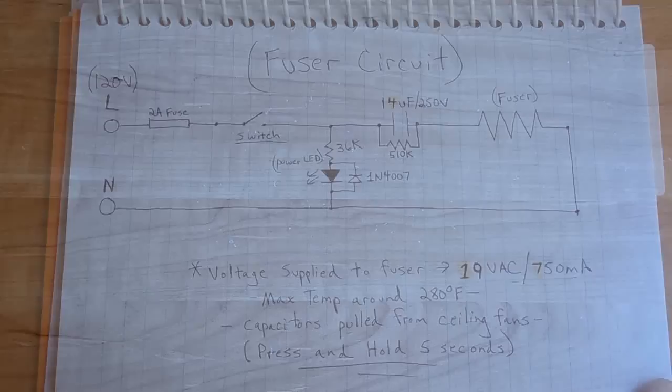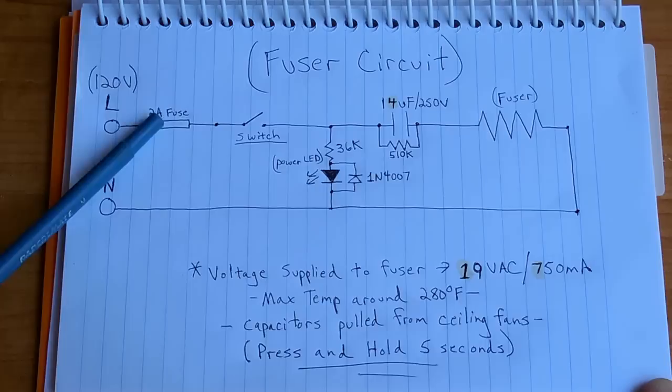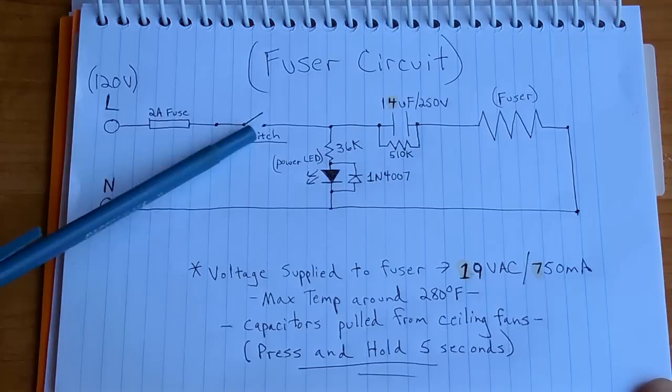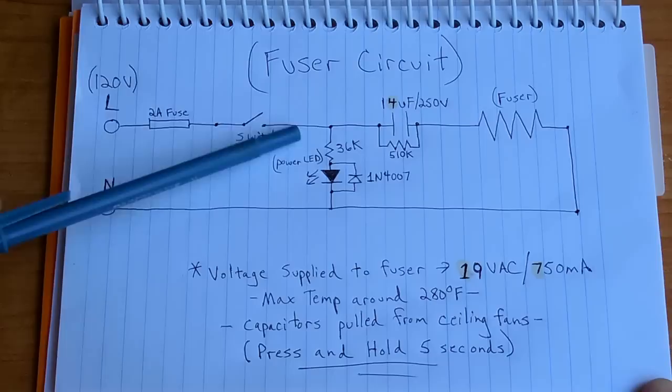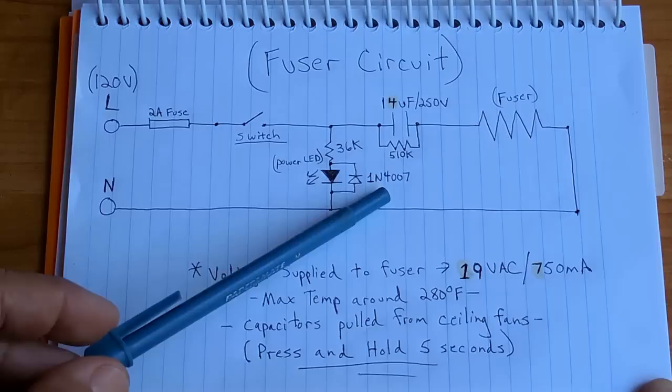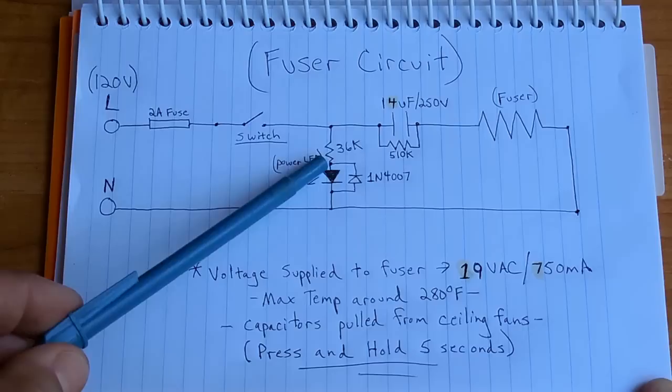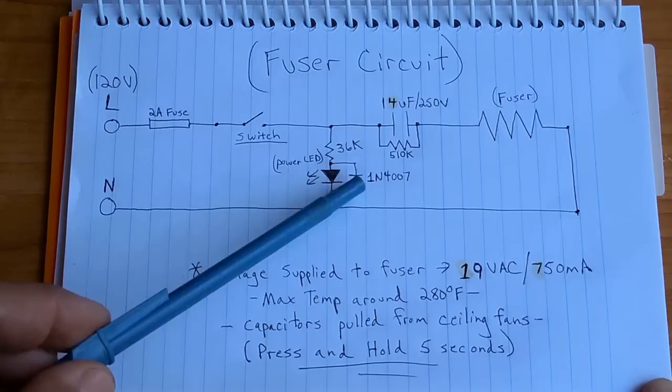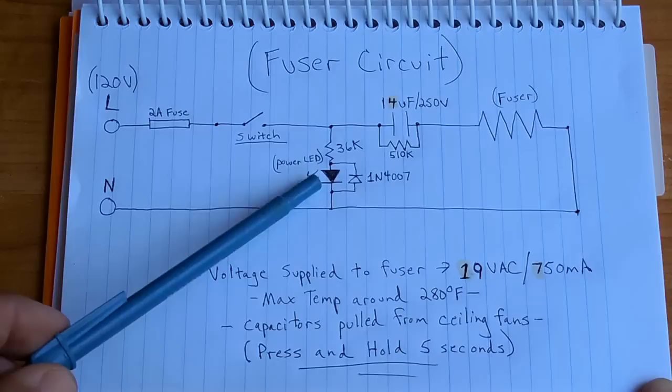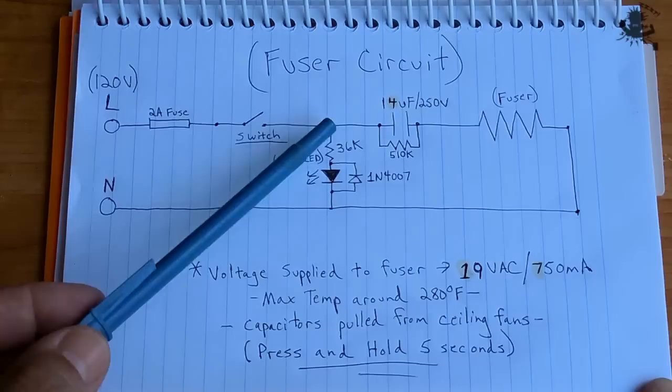This is the 120 volt line, line neutral, from the line into a 2 amp fuse. Once it flows through the 2 amp fuse, you go into the on-off switch. After the on-off switch, you have a 36K resistor going into the power indicator LED. Now I have a 4007 diode connected backwards across the LED. The reason for that is to only allow positive pulses to go through the LED, and then the negative pulses get directed around the LED. Some LEDs do just fine, even with the negative pulses, but some of them do not do well and will burn out very easily. So that's the reason why I added that.